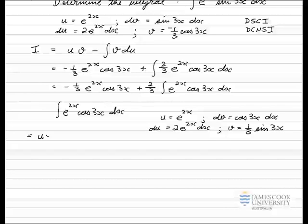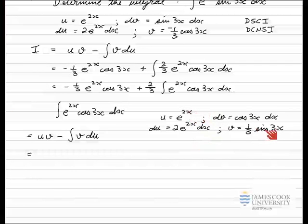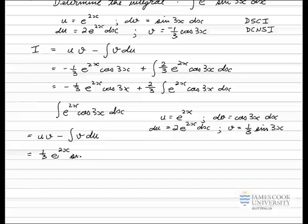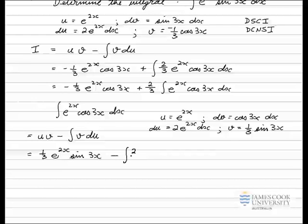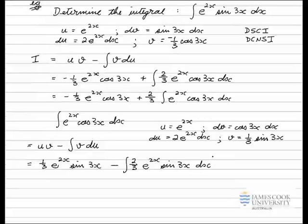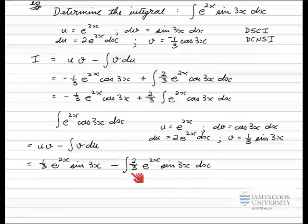We're going to use these functions to integrate our second integral by parts. Writing down the rule, it's equal to uv minus the integral of v du. Substituting the parts in — u times v, writing the coefficient first, then the exponential, then the sine — gives us 1/3 e to the 2x times sine 3x minus the integral of v du, where the coefficients give 2/3 e to the 2x times sine 3x. So the remaining integral is e to the 2x sine 3x with respect to x — the original integral we were given.